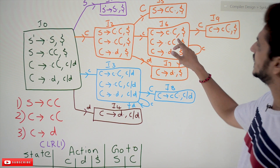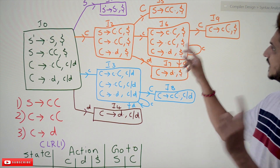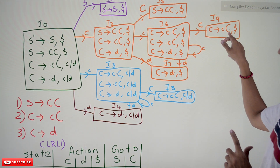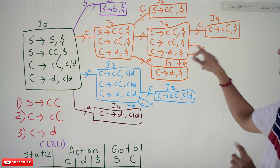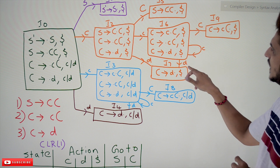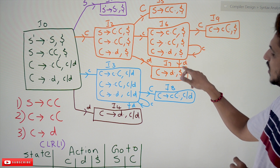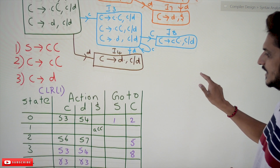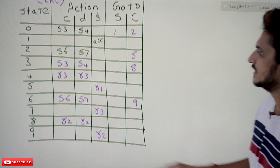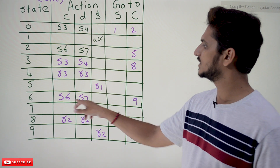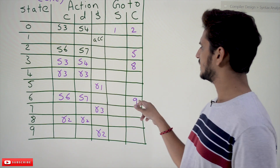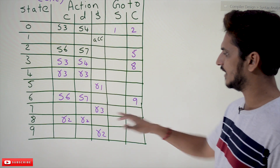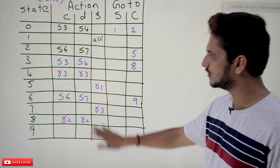For state i6: if you see capital C we are moving to i9 state — write in Go-To. If you see small c, shift to 6; if you see small d, shift to 7. Go-To: ninth state on capital C.